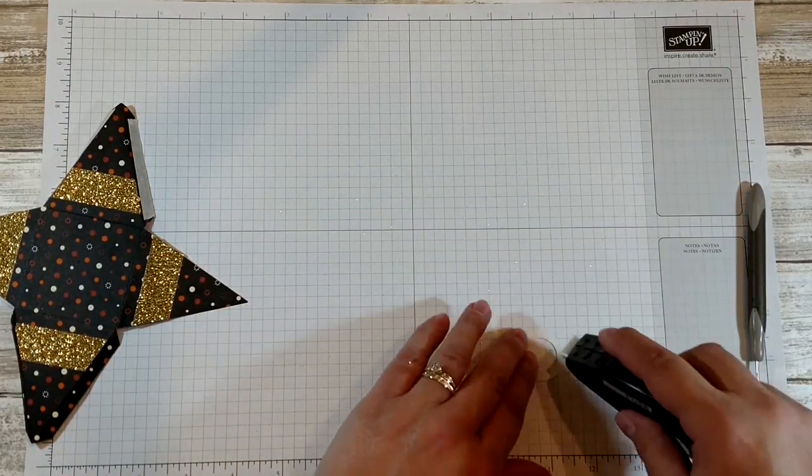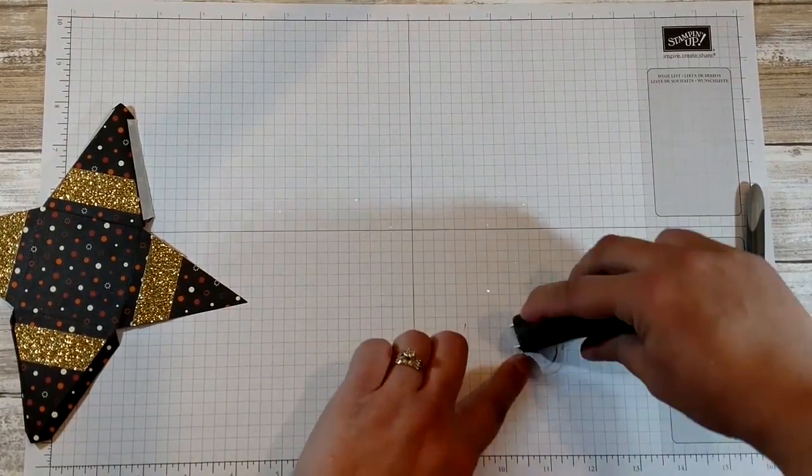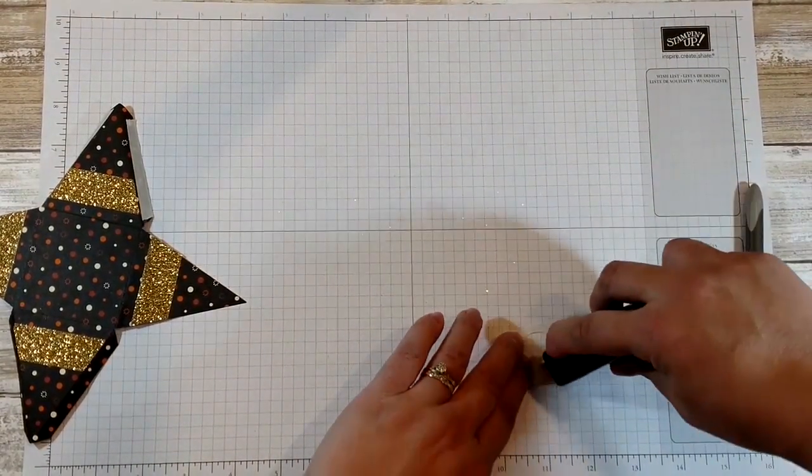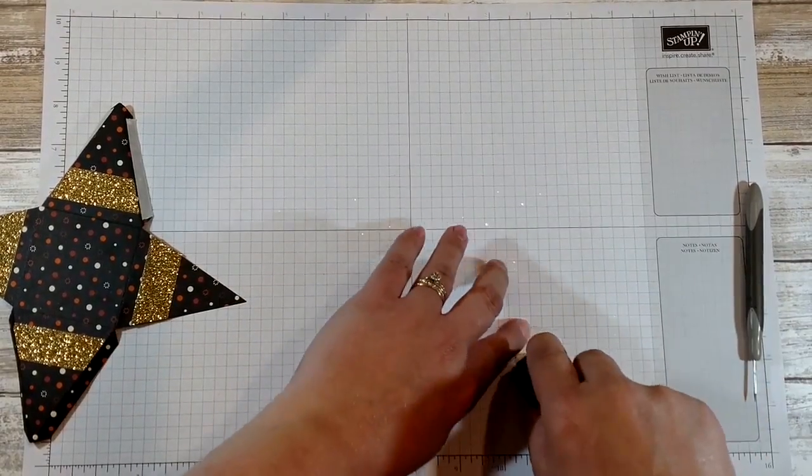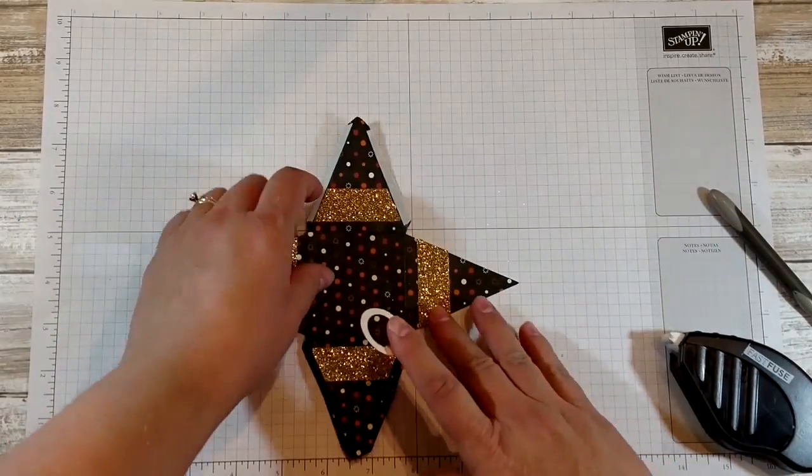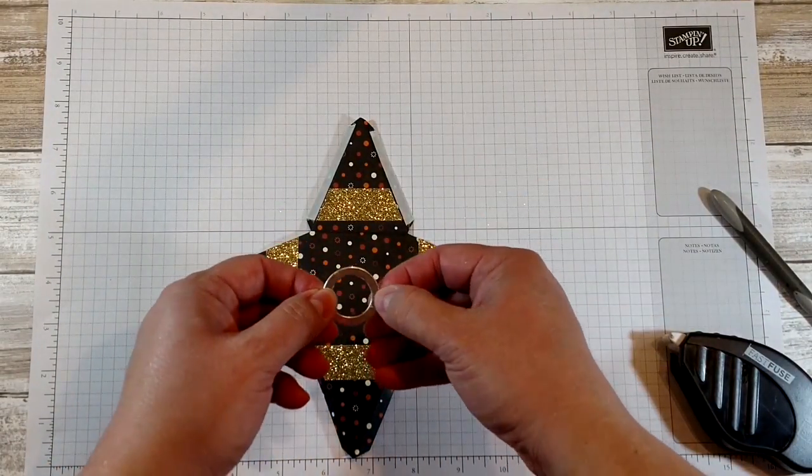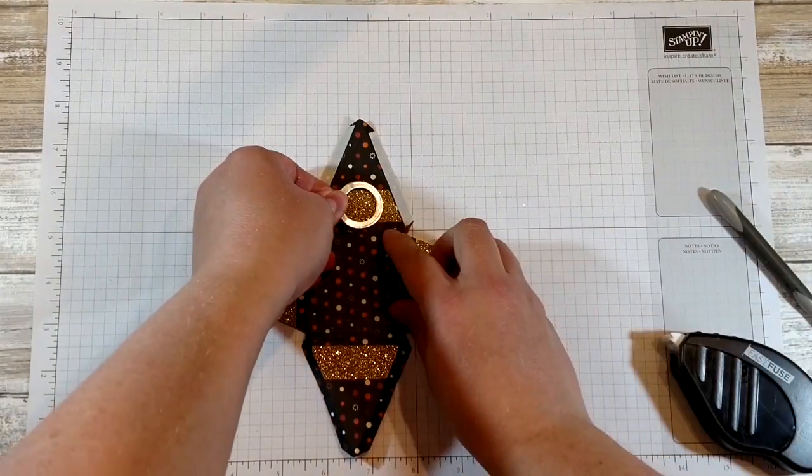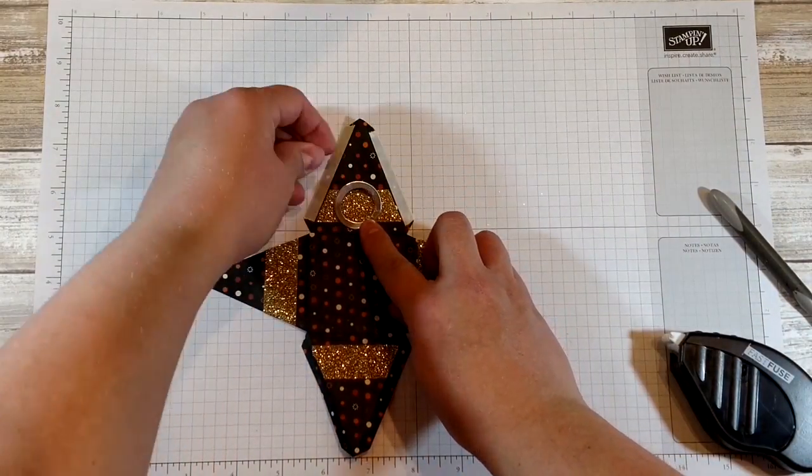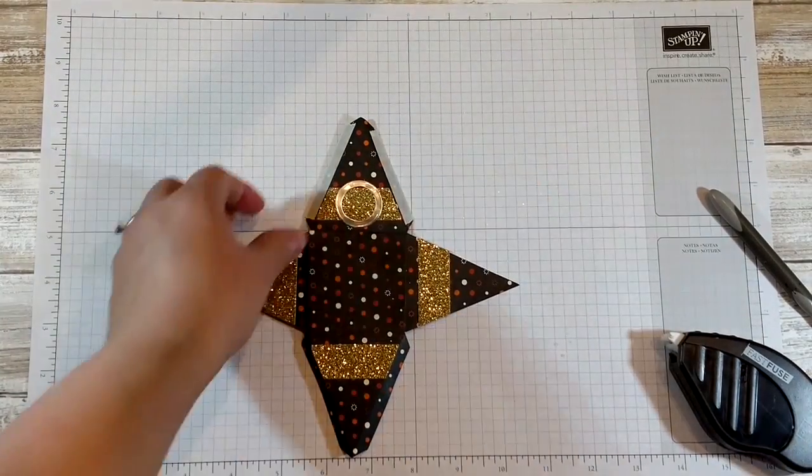So what I'm going to do is put some adhesive on a few places. You want to make sure that the triangle with the tape is still on top. And you're going to put it right in the center of that glitter paper. Now we're ready to assemble.